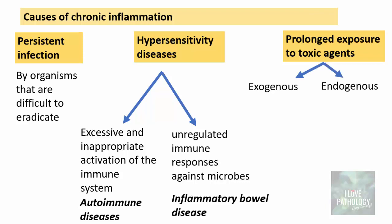Regarding exposure to toxic agents, it can be exogenous or endogenous agents. One common example of an exogenous agent is silica — a dust particle which is ubiquitously found. Prolonged exposure to silica results in a condition called silicosis, which is an occupational lung disease also called pneumoconiosis. Similarly, one endogenous example is cholesterol — a product of normal fat metabolism. Anything in excess, even if it is a normal constituent, can lead to cell injury. When cholesterol is in excess, it can result in atherosclerosis, in which inflammation is also a predominant feature.